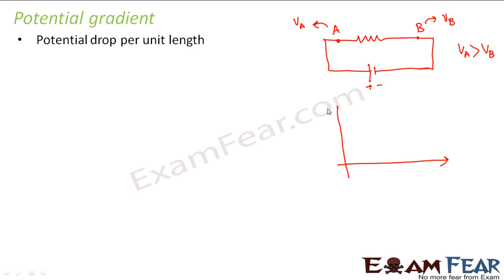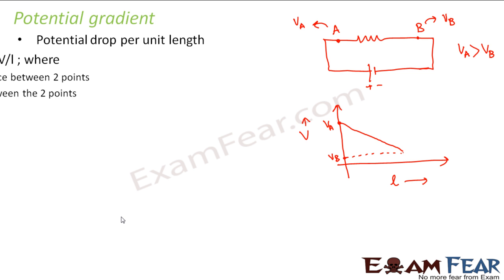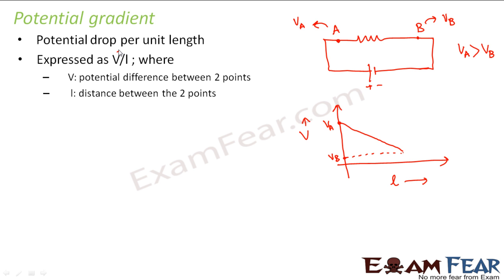If we plot this decrease graphically — with potential on one axis and length on the other — taking the potential at point A and the potential at point B, the graph will be a decreasing line. Potential gradient is nothing but the slope of this line — this divided by this. That is why potential gradient is expressed as V by L, where V is the potential difference between two points and L is the distance between those two points. Here L is the length or distance between A and B, and the potential difference is VA minus VB.